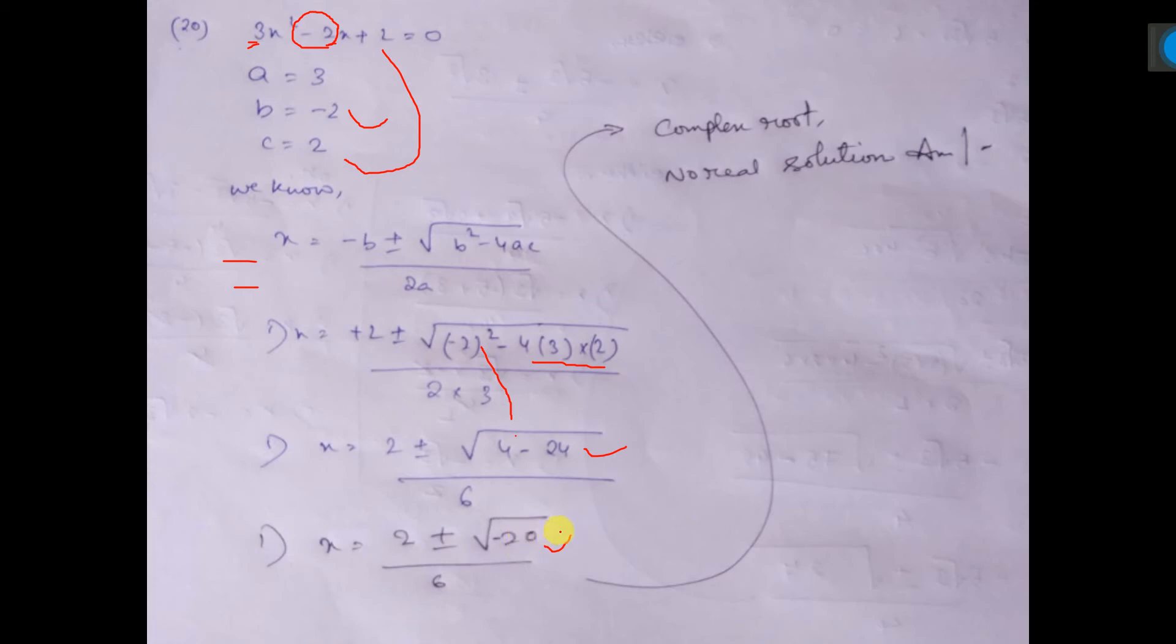Now, square root, if it is coming negative, then the matter is complex. So, you have to write that complex root. Here you see, complex root.